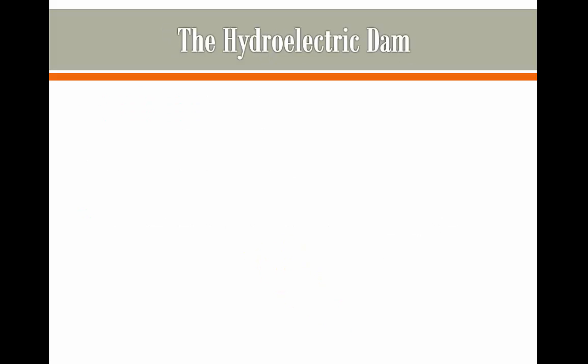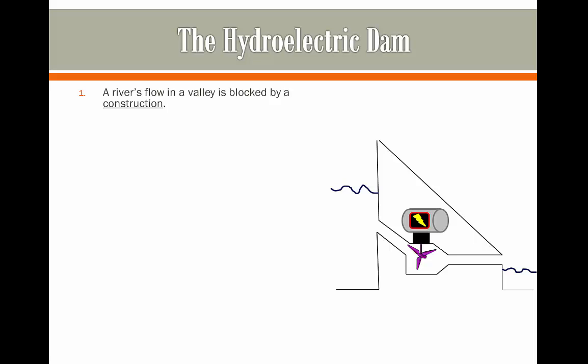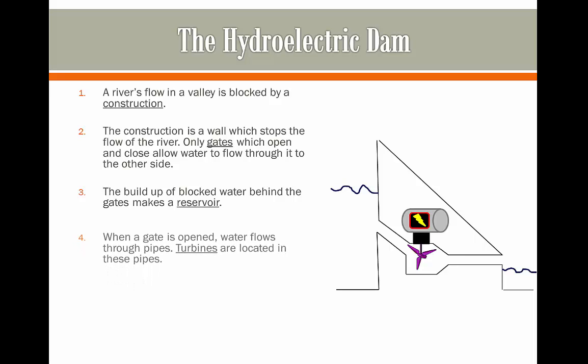The hydroelectric dam is quite simple. As you can see we have a basic dam which can let water flow through it and out of it. A river's flow in the valley is blocked by a construction which we call the dam. This dam is then a wall which is going to stop the flow of the river. Only gates that open and close allow the water to flow through to the other side. The build up of the blocked water behind the gates builds a reservoir, and this reservoir can be controlled with the flow.